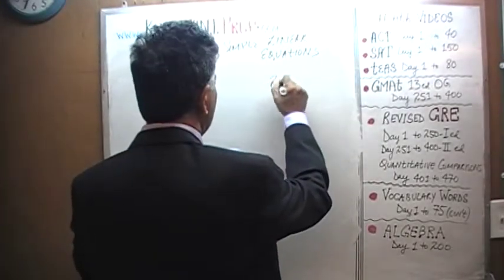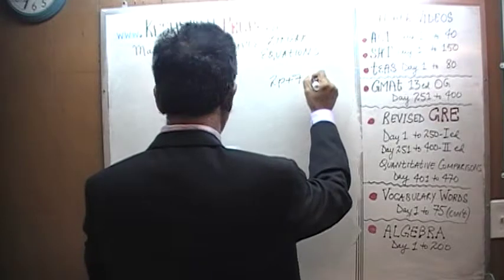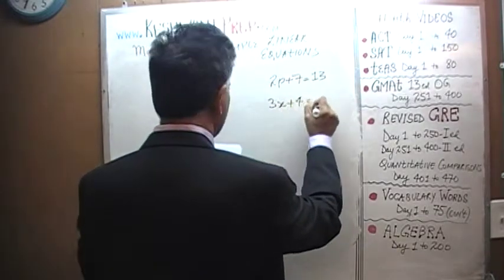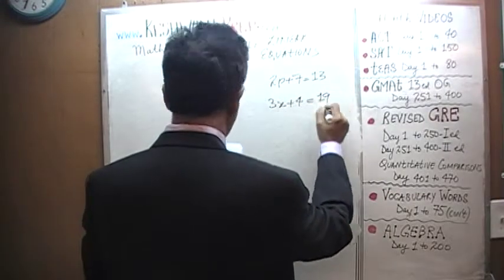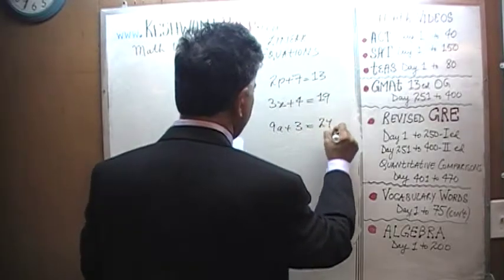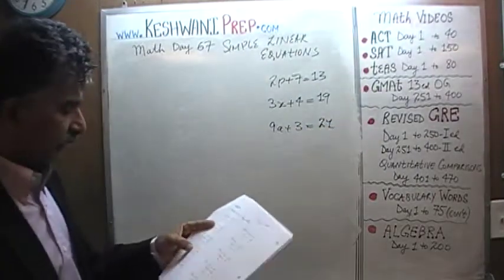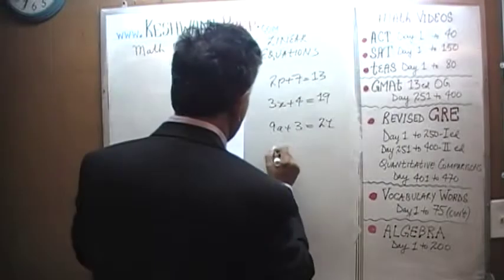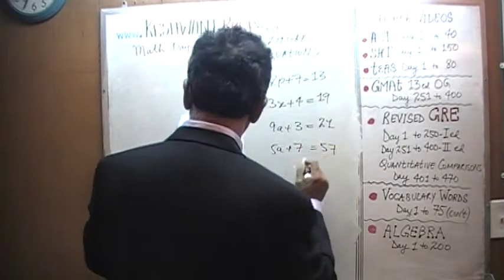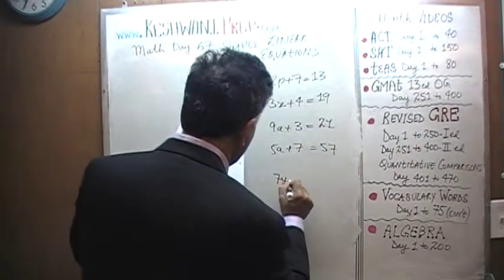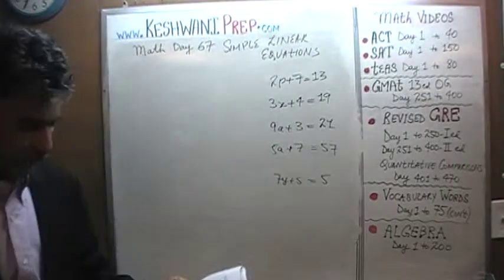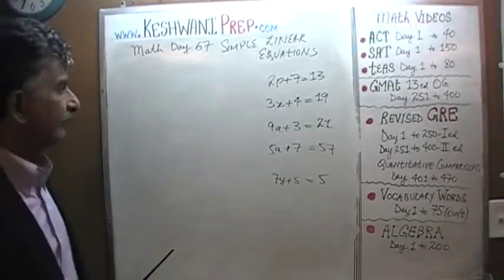Here's the first one: 2p plus 7 equals 13. 3x plus 4 equals 19. 9a plus 3 equals 21. And you should do this on your own first before you watch the video. 5a plus 7 equals 57. 7y plus 5 equals 5. Let's do these five first before we worry about the next five.